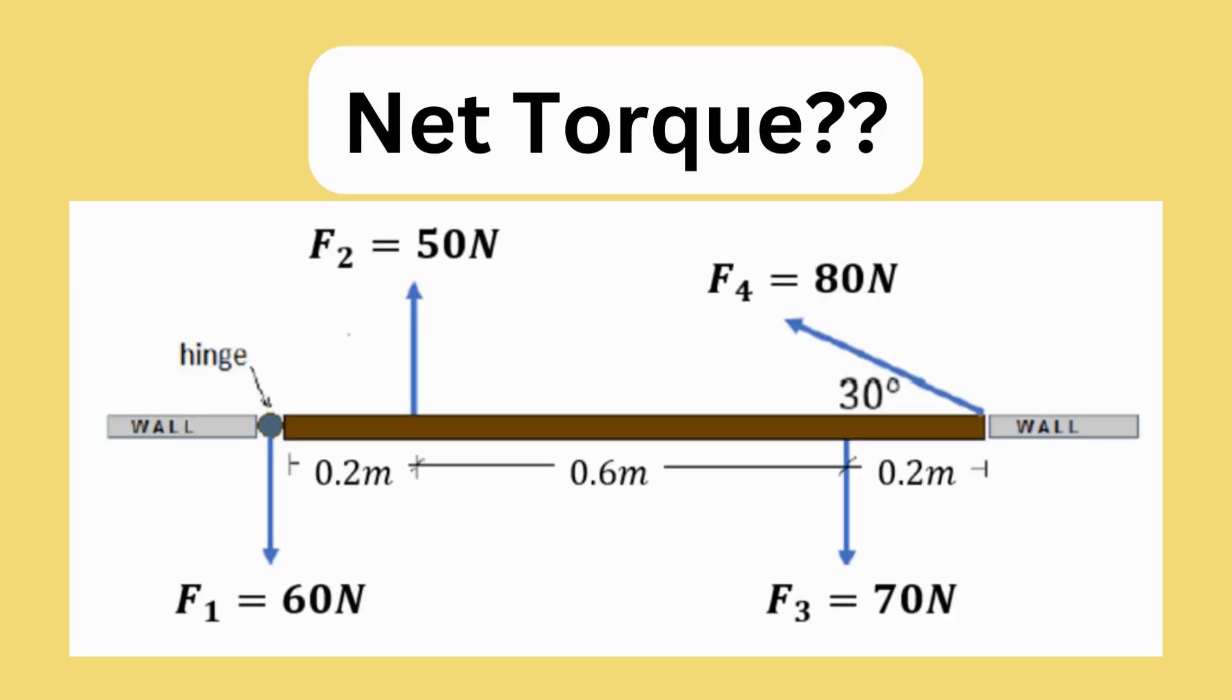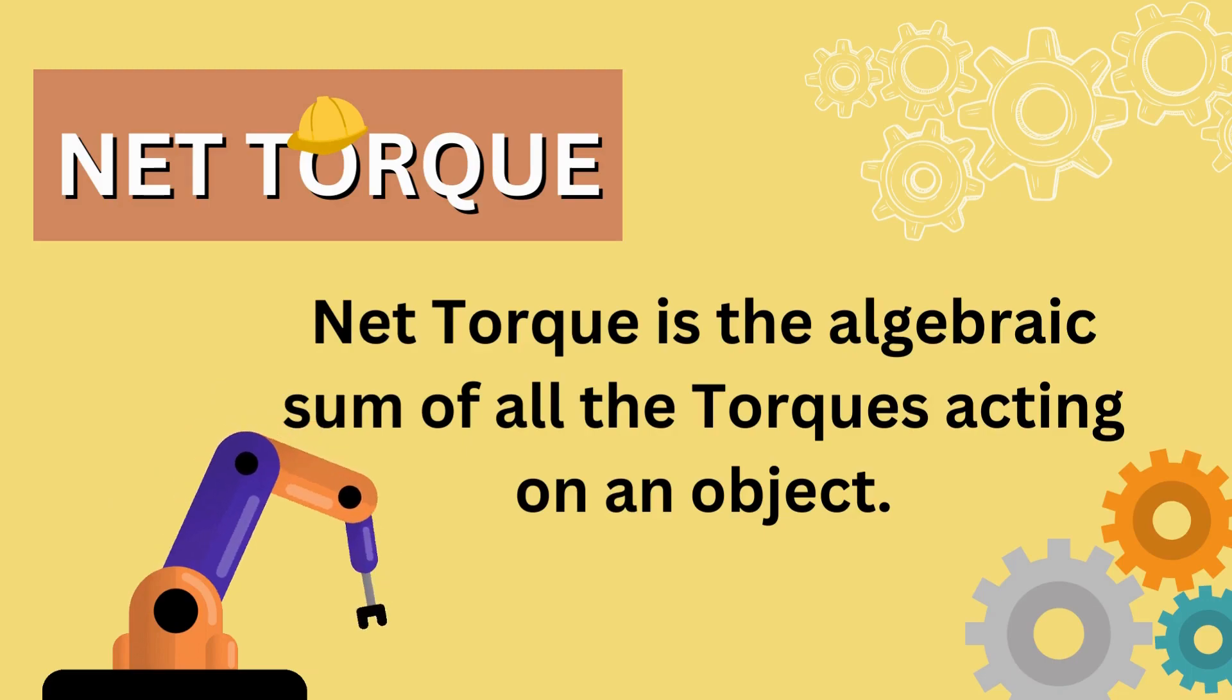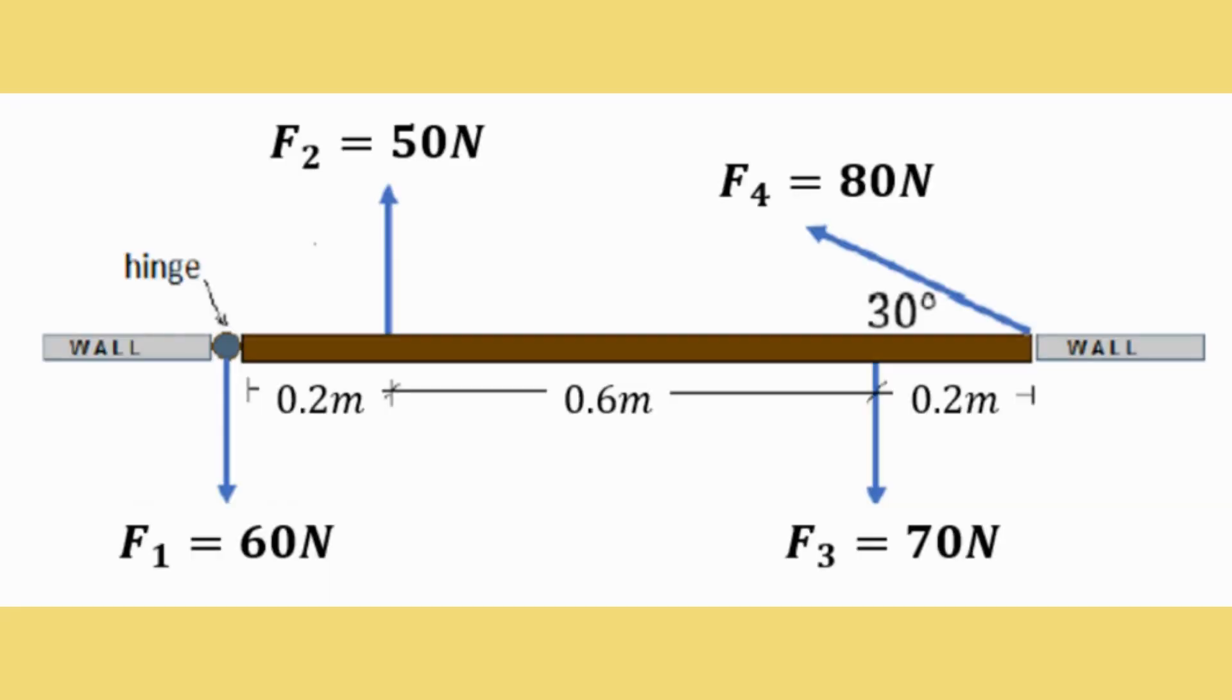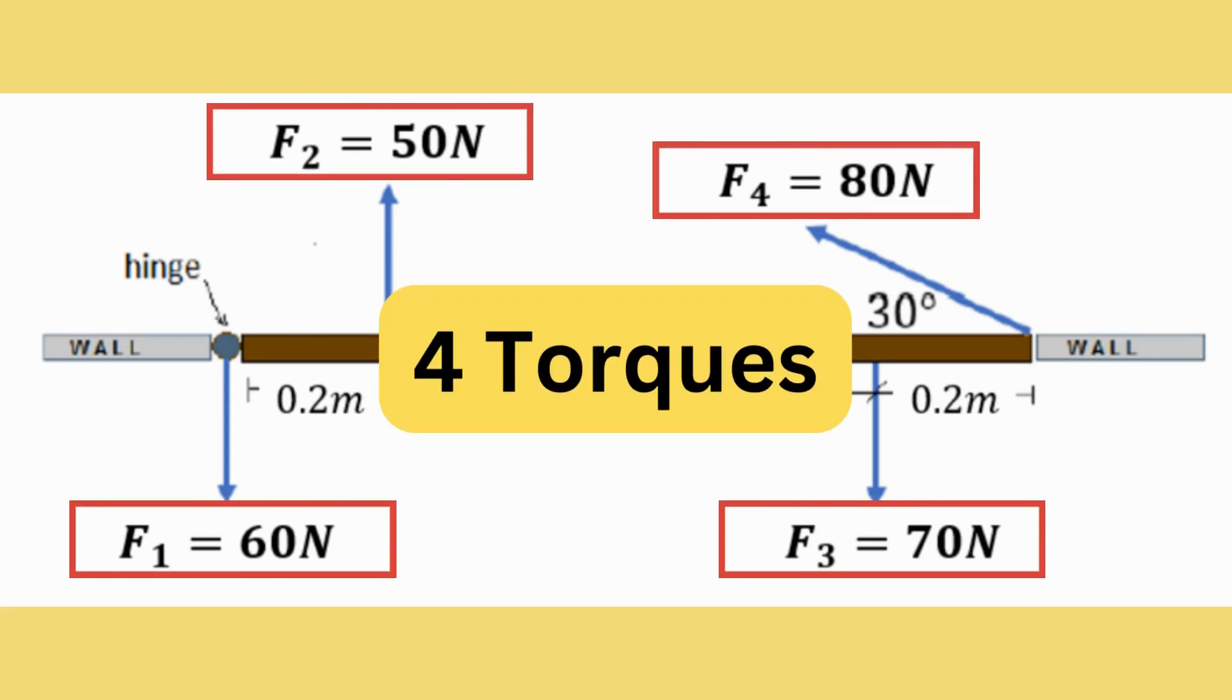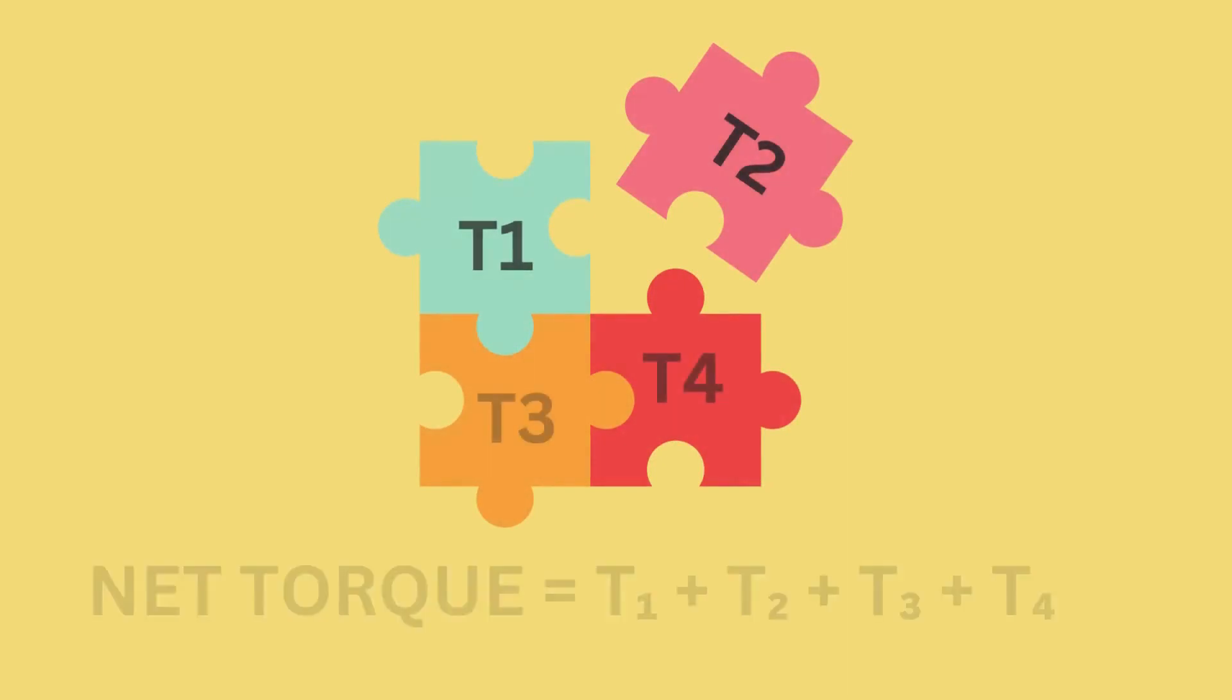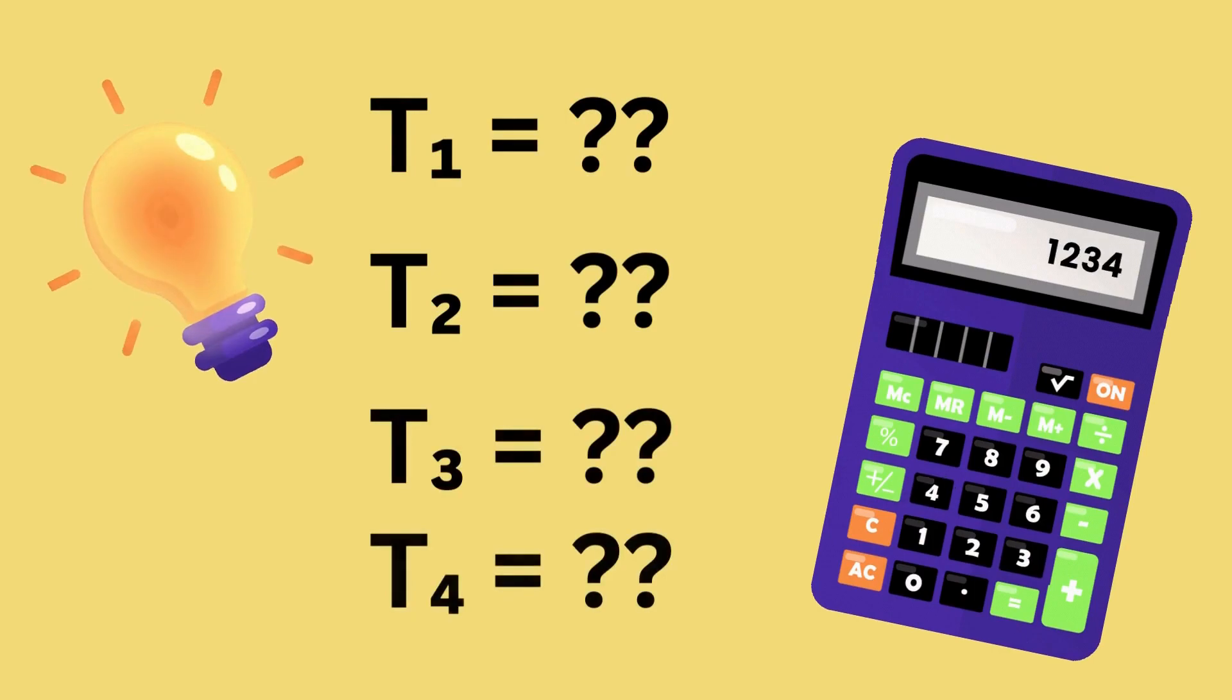So what is net torque? Net torque is the algebraic sum of all the torques acting on an object. In this figure, we can find 1, 2, 3, 4 forces, which also means there are also 4 torques. The net torque will be the algebraic sum of these 4 torques. Let us now solve for the individual values of the torques.